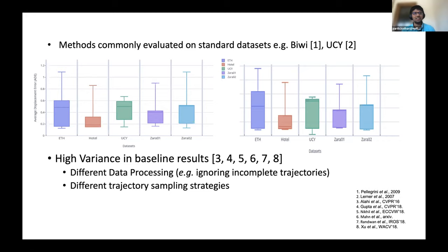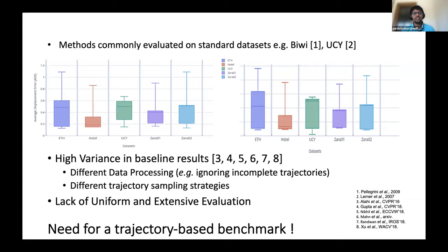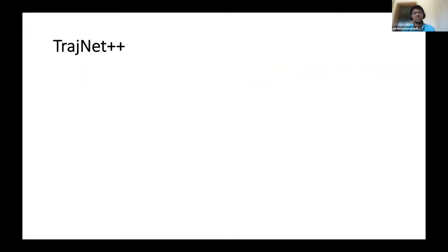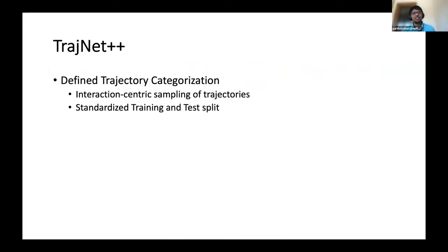And second, there doesn't exist a uniform benchmark which gives a uniform as well as an extensive evaluation of all the metrics which need to be taken care of when we are evaluating our trajectory forecasting model. So these two major points inspired us for a need of a trajectory-based benchmark. And therefore we present to you TrashNet++ in this workshop. So TrashNet challenge first has a defined trajectory categorization, and this defined categorization helps us to sample interaction-centric trajectories.